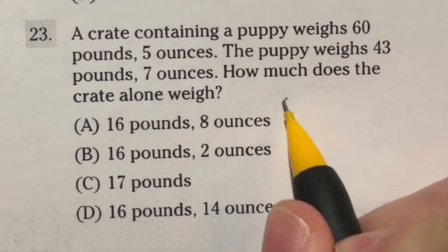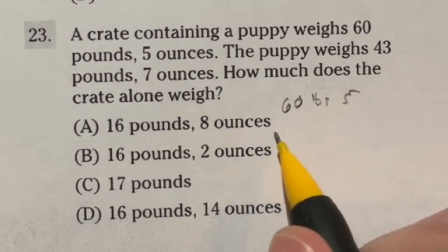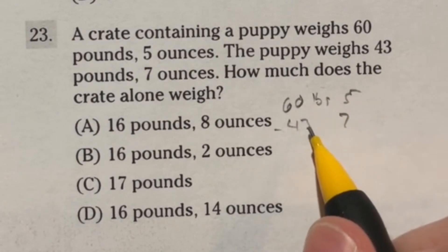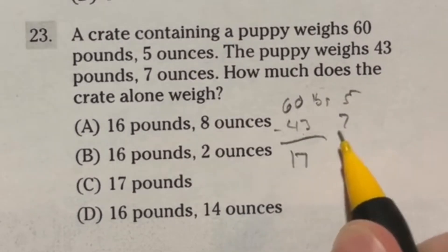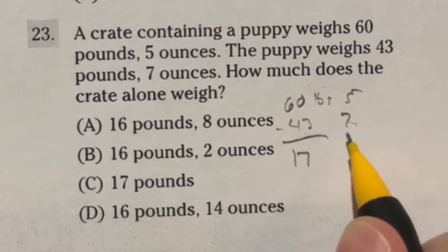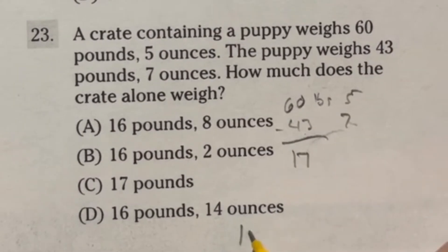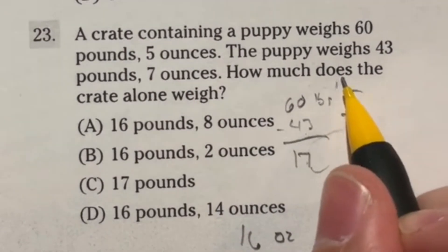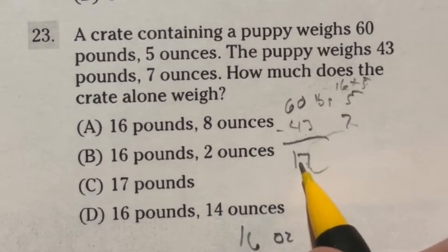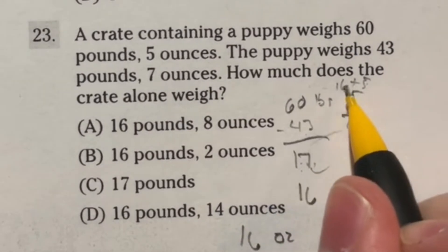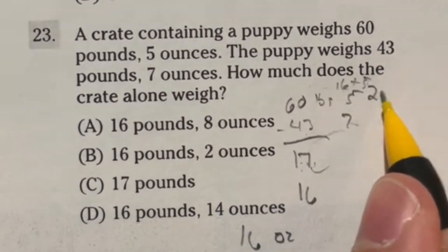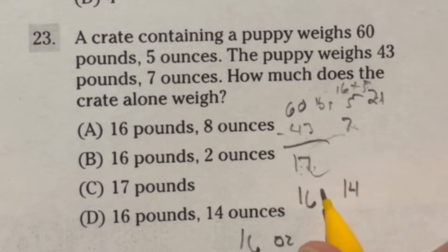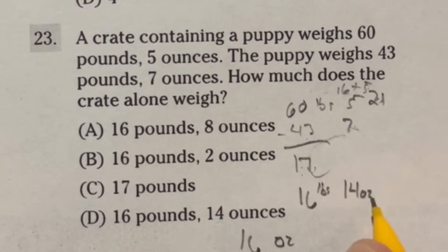So what we need to do here is we need to do 60 pounds, 5 ounces, minus that 43 pounds, 7 ounces. Now looking at this, the first thing I'm going to do is just subtract these pounds. So 60 minus that 43 is going to give me 17. But I can't do 5 minus the 7, I have to carry one over. Typically, we carry it over in like the 10s place. But because there are 16 ounces in a pound, then that means that when I pull one of these over, I'm actually pulling over 16 to that 5. So 16 plus that 5. So I'm going to drop this 17 pounds down to 16, because I pulled the 16 ounces over. Now 16 plus that 5 is going to give me 21. Now I can do 21 minus that 7. So if I do 21 minus the 7, it's going to give me 14. So our final answer here should be 16 pounds and 14 ounces, which is option D.